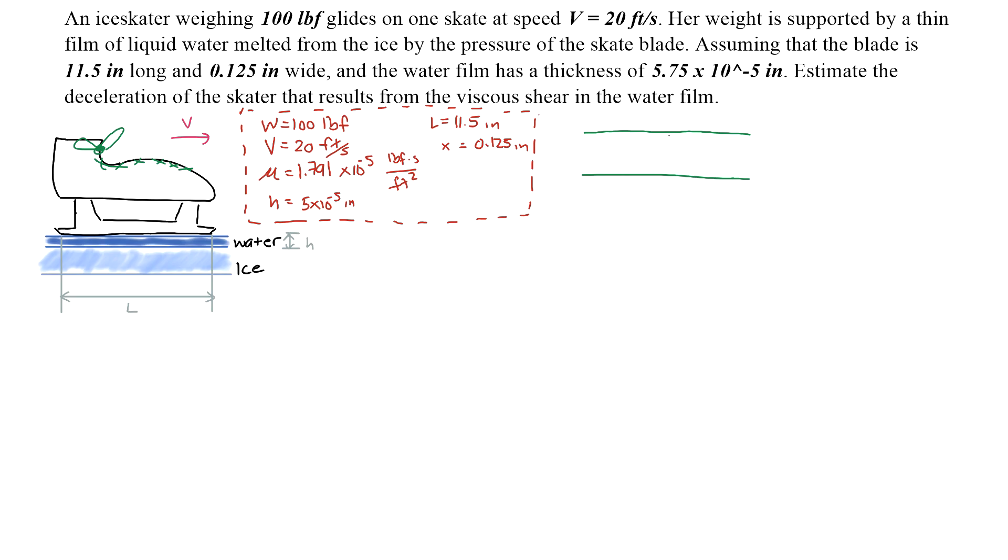Therefore, the velocity profile of this thin film will have the velocity at the very top touching the skate going to be V. And then through momentum diffusivity, this is going to decrease to 0 because the ice is not moving. So the velocity profile looks something like this.